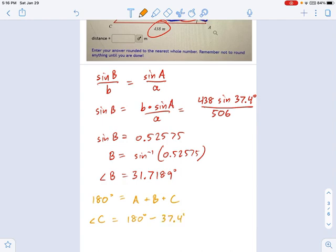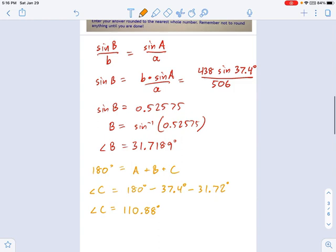So what do we have? 37.4 degrees. And the one we just found, which was 31.7, I'm going to call it 72 degrees, but don't you round when you're doing your calculations. I don't want you getting dumb rounding errors here. 37.4 minus 31.72. We're going to get angle c equals 110.88 degrees. Super.